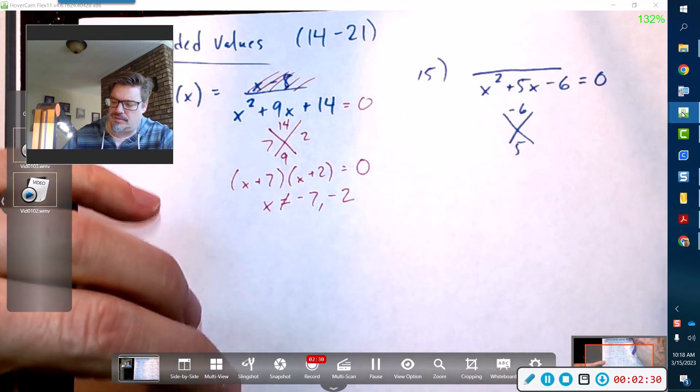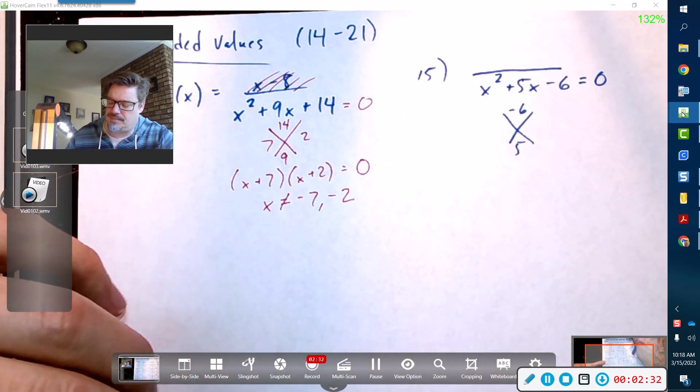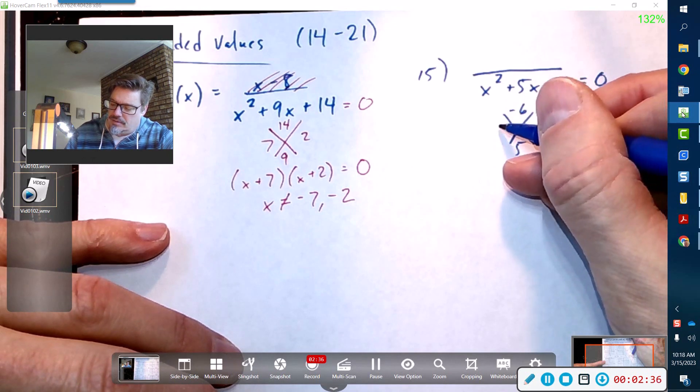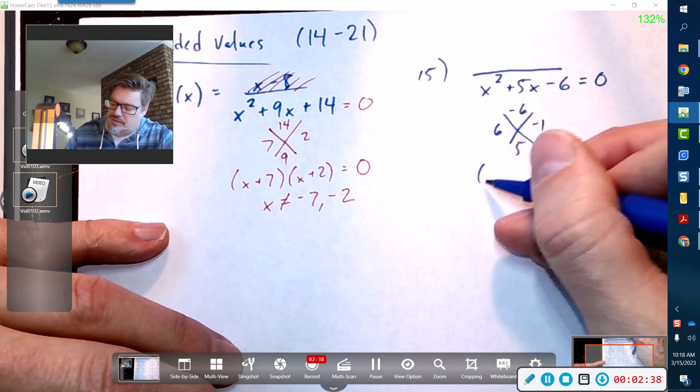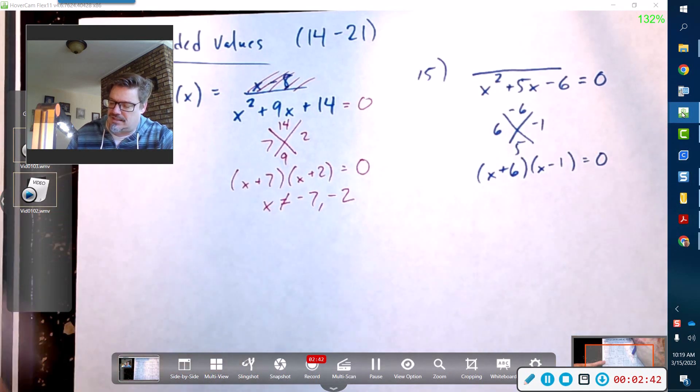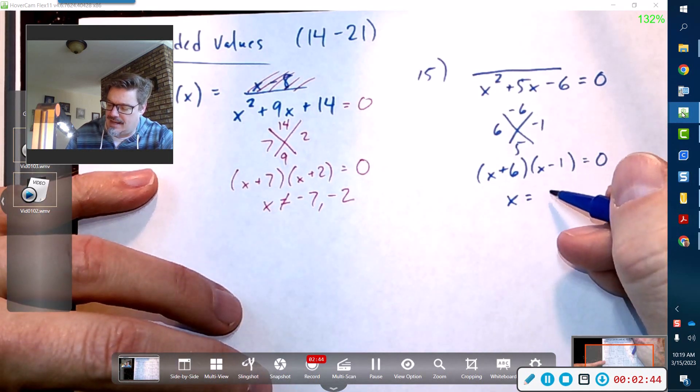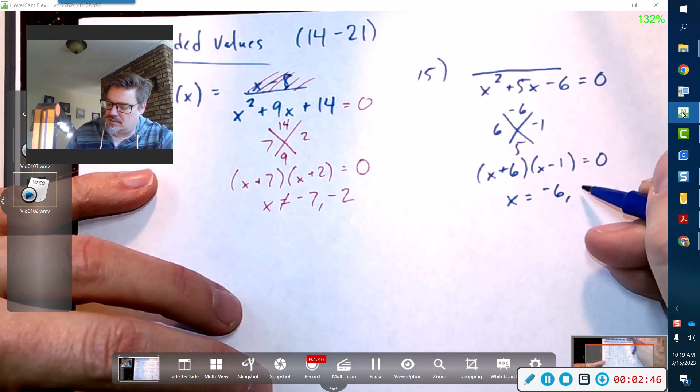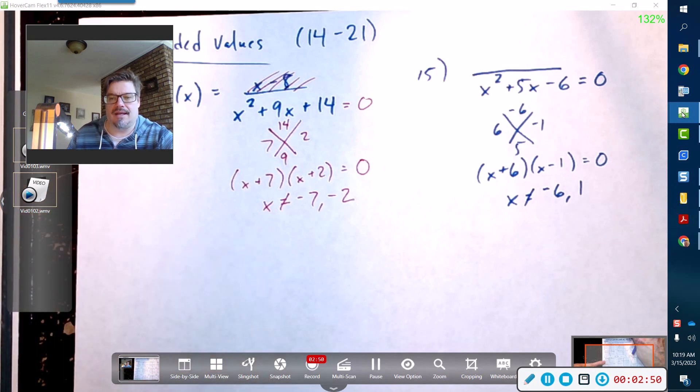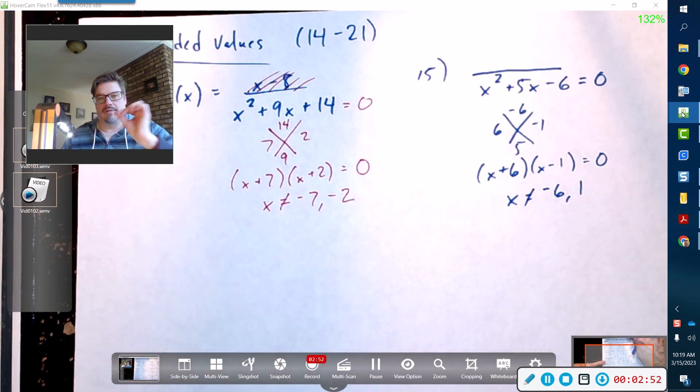Factors of this: that would be positive 6 and negative 1, so we write this out so that we understand that x cannot equal negative 6 or 1. We put cannot equal negative 6 nor 1. That's called finding the excluded values.